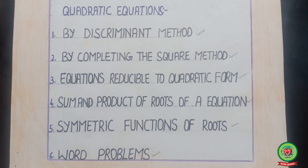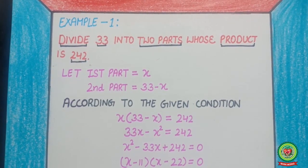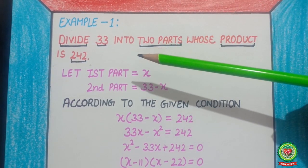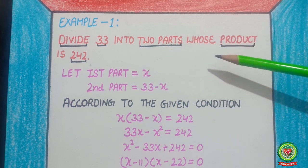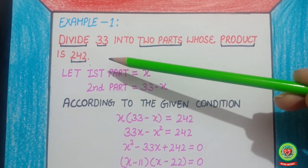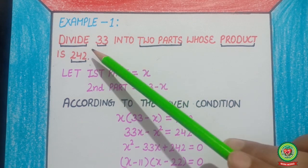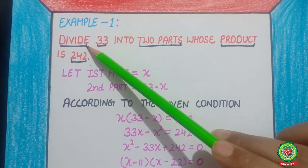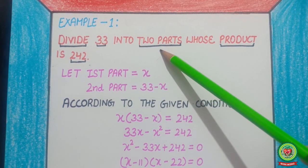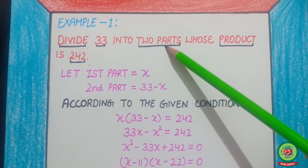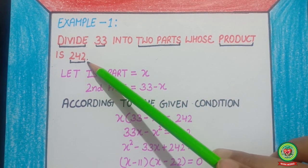Our first example is: divide 33 into two parts whose product is 242. First of all, we are going to underline the keywords: divide, number 33. How many parts are there? Two parts, and their product is 242.